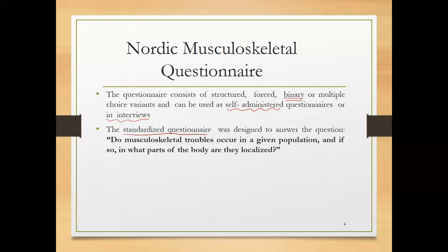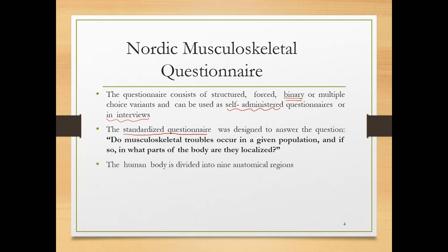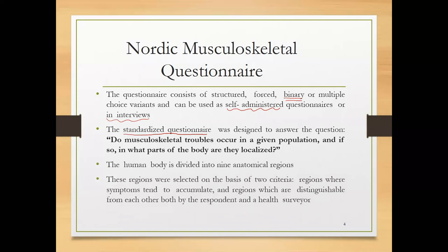There are different variants of the standardized questionnaire which you can find in the literature as well. The human body is divided into nine anatomical regions. These regions were selected on the basis of two criteria: regions where symptoms tend to accumulate, and regions which are distinguishable from each other both by content and a health surveyor.